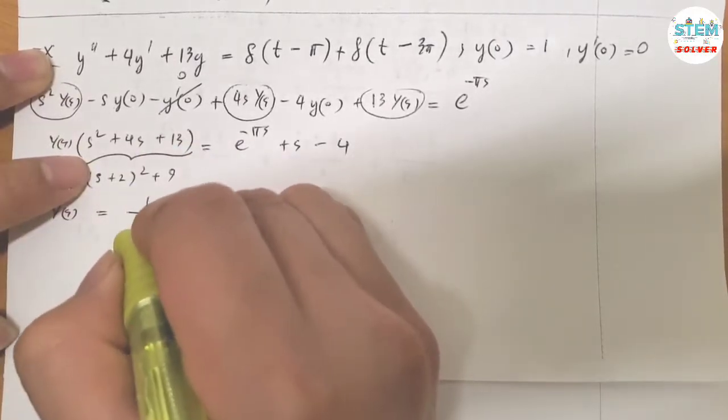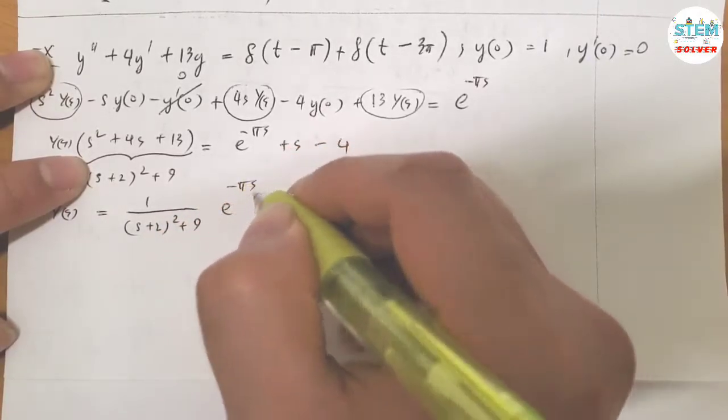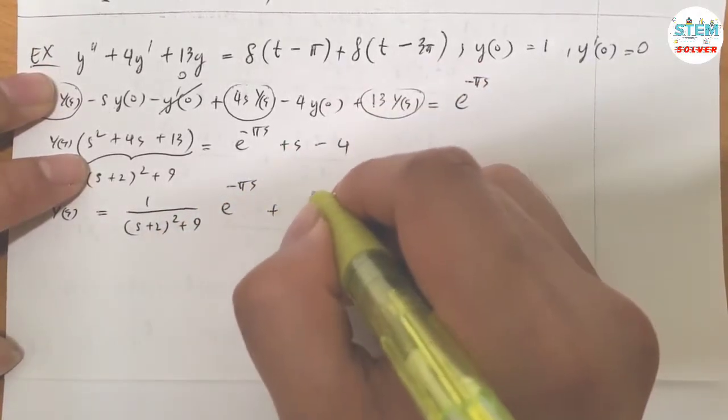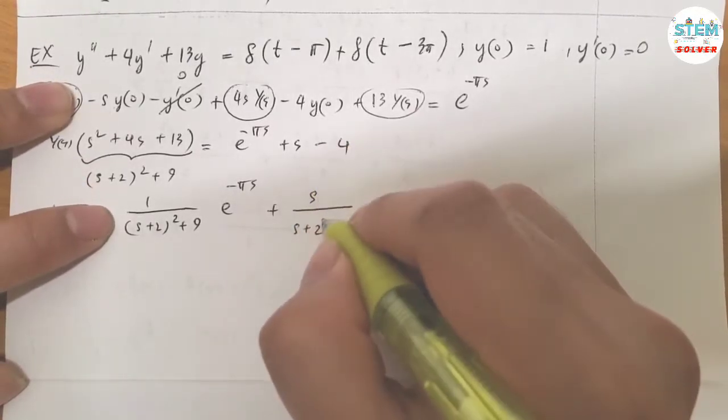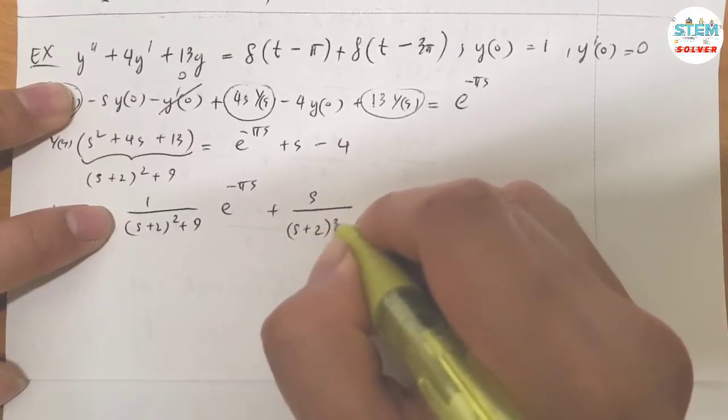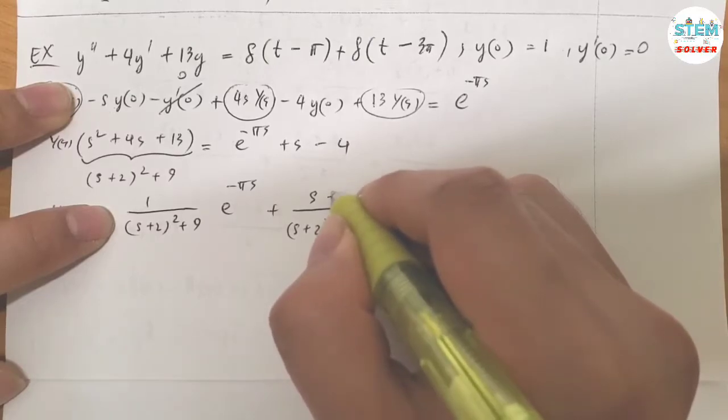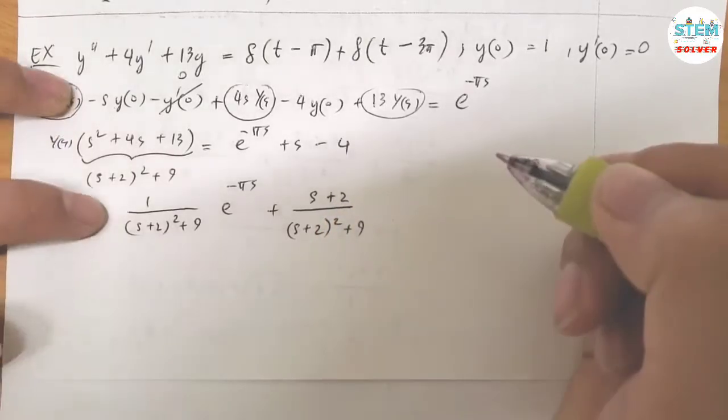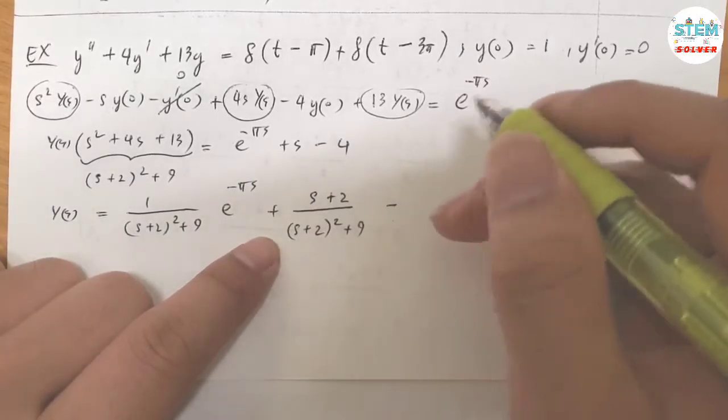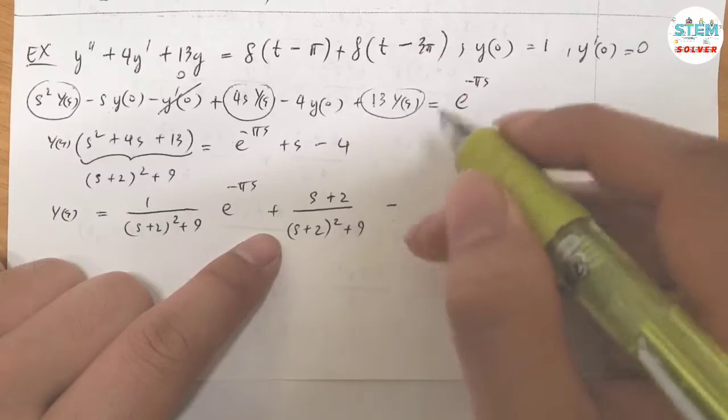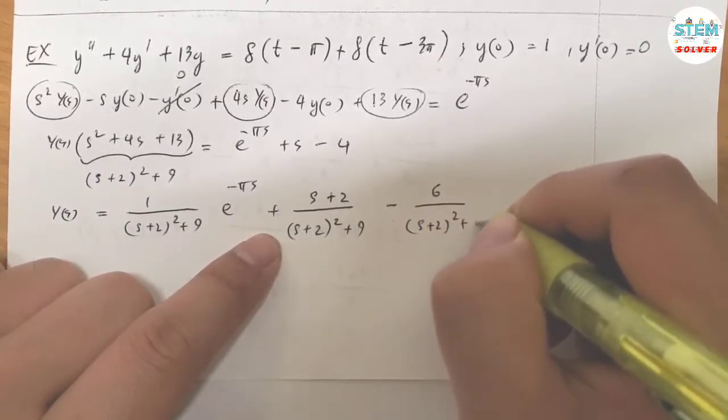We have 1 over S plus 2 squared plus 9 times e to the negative pi S, plus S over S plus 2 squared plus 9. This one, I'm going to write it as S plus 2.